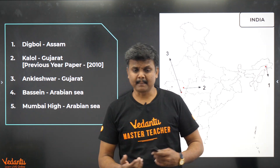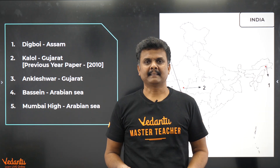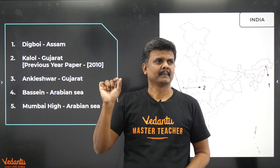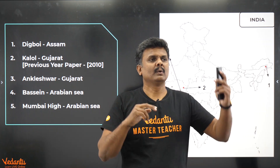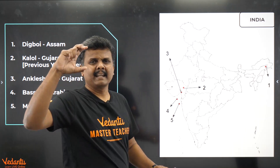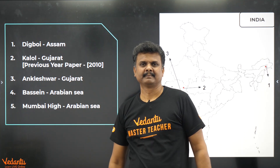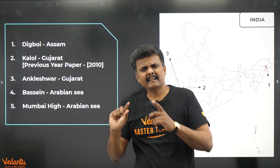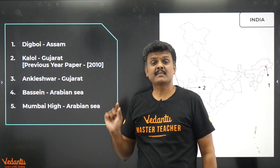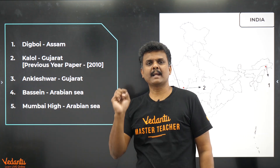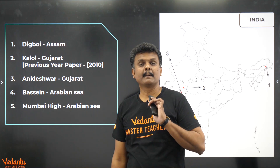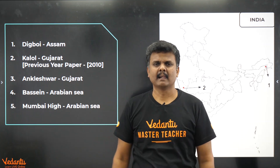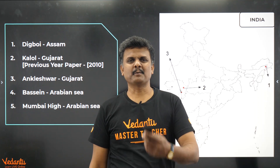There are simple ways to remember the oil fields. Create the words — Digboi, Kalol, Ankleshwar, Bassein, and Mumbai High — and create an innovative story relating them to oil fields. That way you will easily remember. If you are finding difficulty, let me know and we can figure something out.